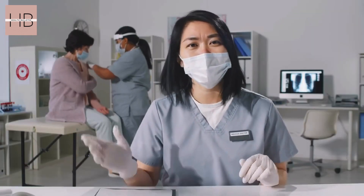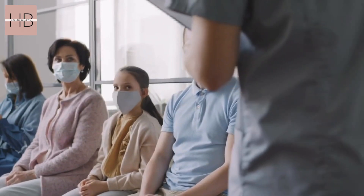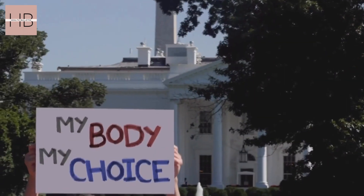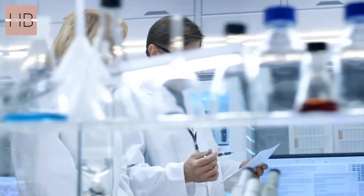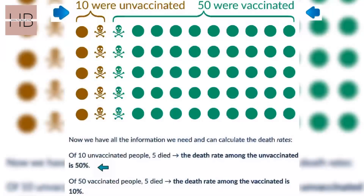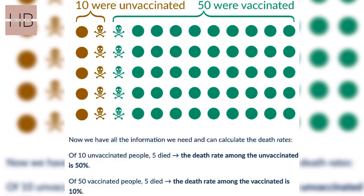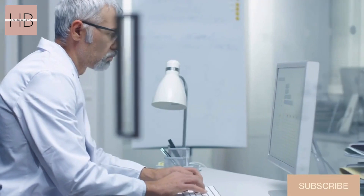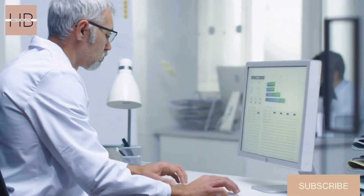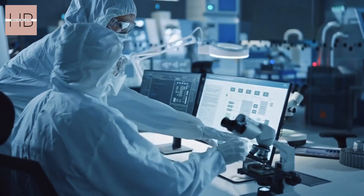To be able to say anything, we also need to know about those who did not die, and how many people in this population were vaccinated, along with how many were not vaccinated. Now we have all the information we need and can calculate the death rates. Out of every 10 unvaccinated individuals, tragically if half of them — that's five people — succumbed to their illness, leading to an alarming death rate of 50% among those who hadn't received the vaccine. And if out of 50 vaccinated people five died, the death rate among the vaccinated is 10%. We therefore see that the death rate among the vaccinated is five times lower than among the unvaccinated.